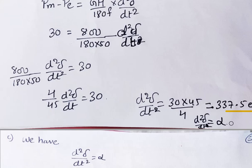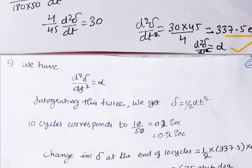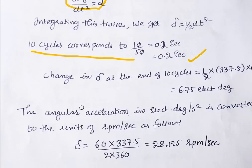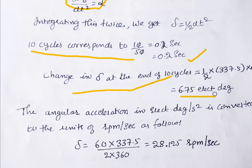We can also call d²δ/dt² as alpha. Integrating the equation twice gives δ = ½ × alpha × t². Now 10 cycles at 50 Hz corresponds to 10/50 = 0.2 seconds. The change in delta at the end of 10 cycles: δ = ½ × 337.5 × (0.2)² = 6.75 electrical degrees.